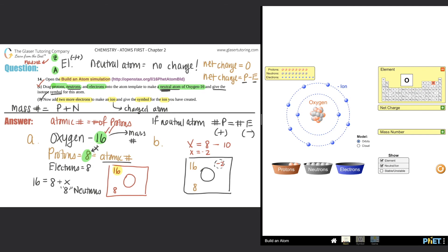With more electrons, you will always have a negative charge. With more protons, you will always have a positive charge.